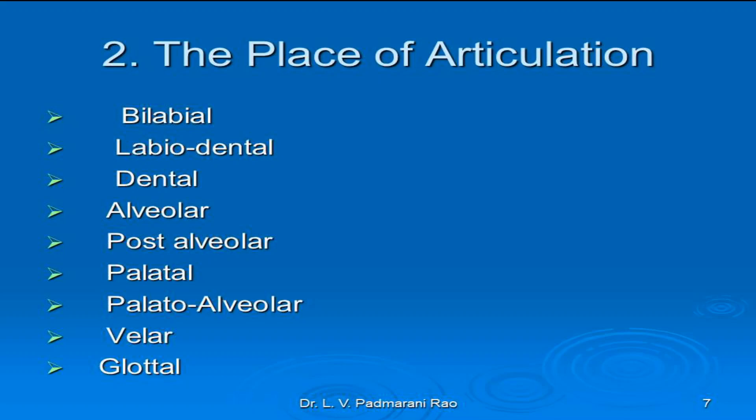Then we have the palato-alveolar sound. Sounds that are articulated by the tip of the tongue against the teeth ridge with the front of the tongue raised towards the hard palate are called palato-alveolar sounds. The examples are CH, J, SH, and ZH, where the teeth ridge as well as the hard palate are involved. The next is the palatal sound, in the production of which only the hard palate is involved, as in Y as in 'yet' and 'yes'.